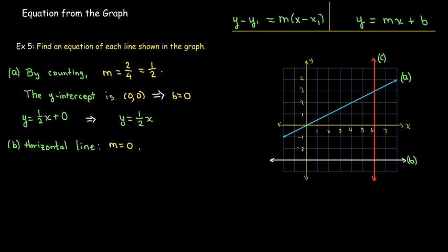Now in B, I have a horizontal line. So I know its slope is 0, and I know the intercept is here at -3. I can use the slope-intercept form, and I'll get y equals 0x minus 3, or y equals -3.